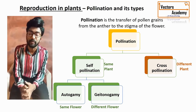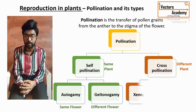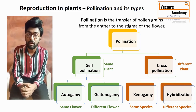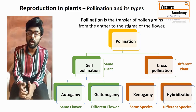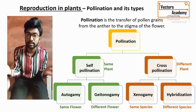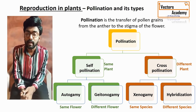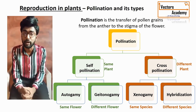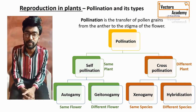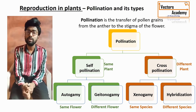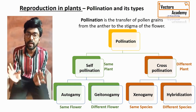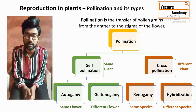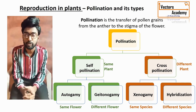Cross-pollination is also called allogamy, where 'allo' stands for different and 'gamy' stands for marriage. It is of two types. Xenogamy is the transfer of pollen grain from anther to the stigma of another flower of another plant belonging to the same species. Hybridization is the transfer of pollen grain from anther to the stigma of another flower of another plant belonging to two different species.